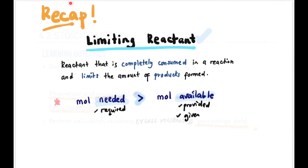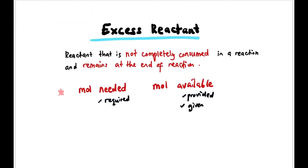Let's do a recap. The limiting reactant is completely consumed and limits the amount of products formed — mole needed is more than mole available. Meanwhile, the excess reactant is not completely consumed in a reaction and remains at the end — ada baki-baki lagi — the mole needed is less than mole available.